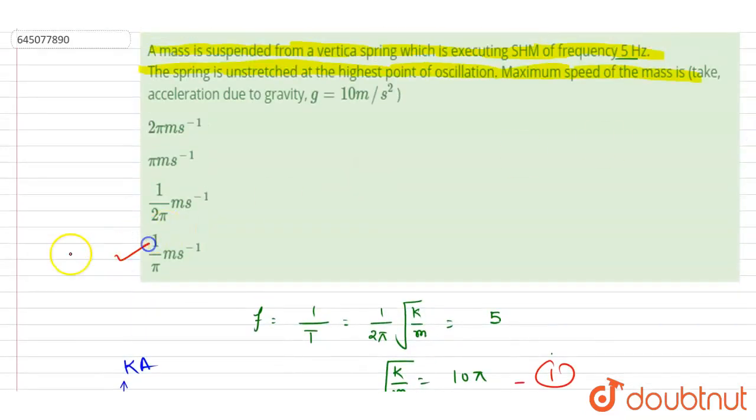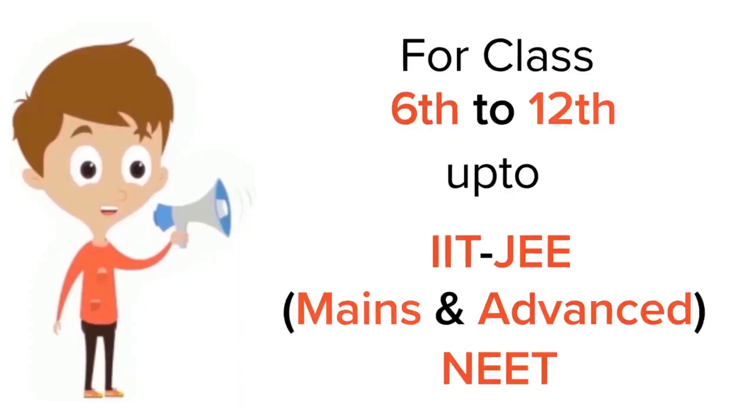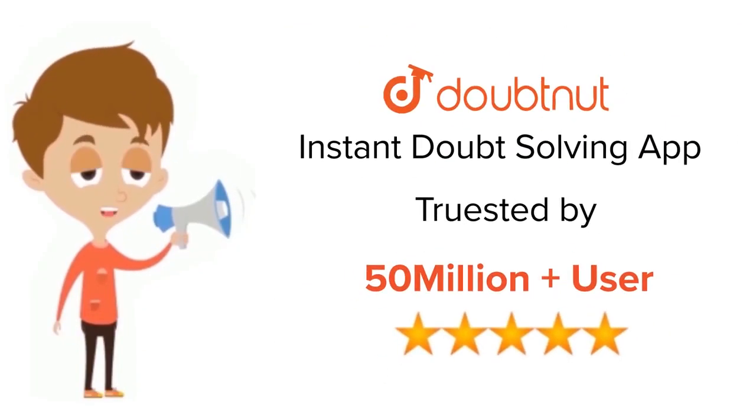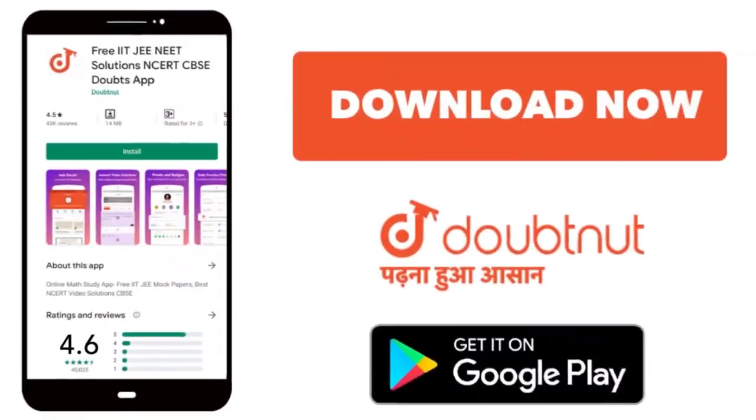Now you can check for the option, D is the correct option. Thank you. For class 6 to 12, IIT-JEE and NEET level, trusted by more than 5 crore students. Download Doubtnet app today.